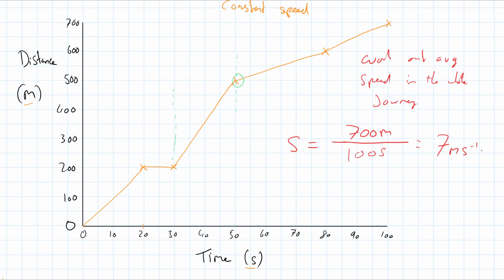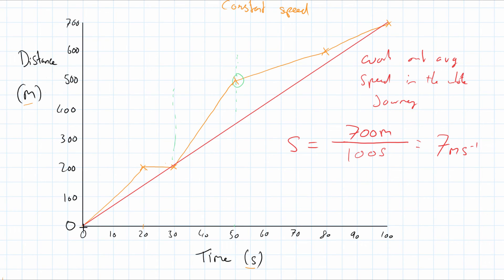That means if we had traveled at one constant speed from start to finish and ended up at the same place, we would be going at 7 meters per second. I can draw that in red — a straight line from the starting point to the finishing point. If you calculated the gradient of that red line, it would give you 7 meters per second, which is the average speed of our whole journey.